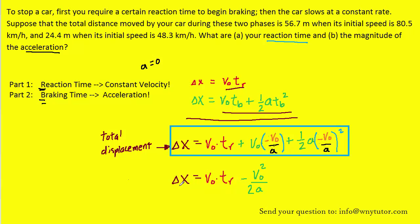We now have an equation that represents the total displacement that the car undergoes in terms of things that we know or we want to calculate. We have the initial velocities, which were given in the question. Then we have the reaction time, which we're trying to solve for in part A, and the acceleration, which we're trying to solve for in part B. It's a pretty convenient equation.